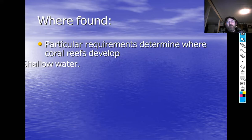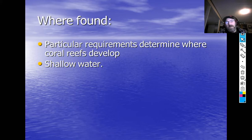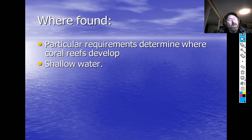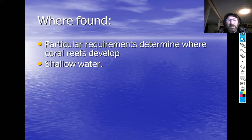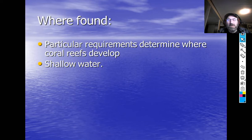Coral reefs tend to be found in certain spots — they tend to be found in shallow water. We'll get into why, but shallow water because they need the light. There is an organism that lives in them called zooxanthellae that we're going to talk a lot about. The zooxanthellae are a dinoflagellate symbiont — they are a mutualist. They live in the tissues of the corals and provide the corals with food and nutrients.